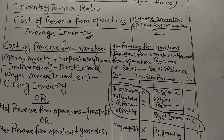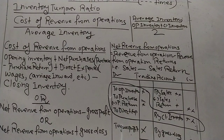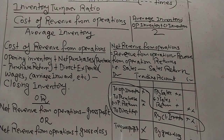That is the first formula under activity or turnover ratios — Inventory Turnover Ratio. Please copy this entire content into your notes and go through it. When I start with the sums in the next video, we will be able to solve them together and I will guide you through that process. Thank you for watching. If you like the video, please subscribe to my channel. Do let me know if there are ways I can improve my videos.